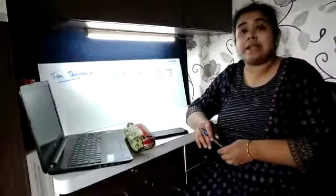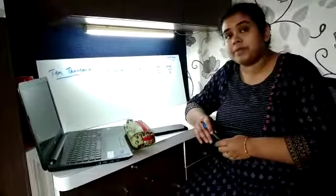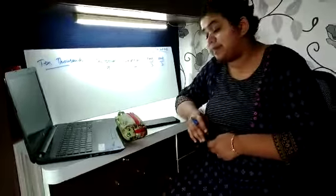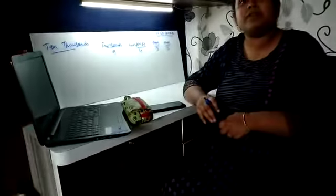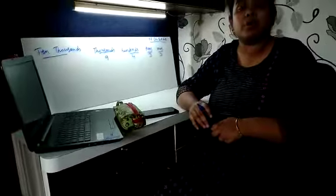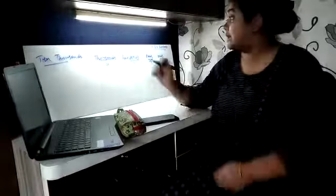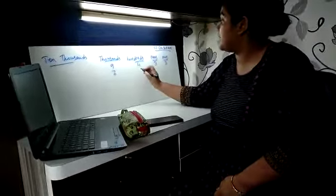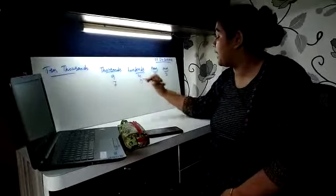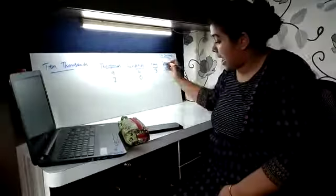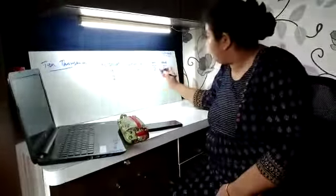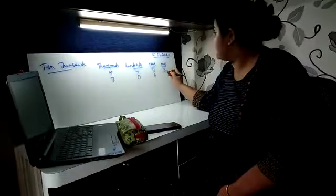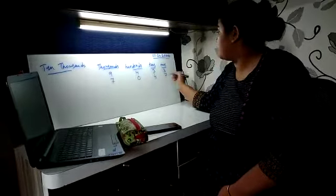Is it clear everyone? Now let us go to the next sum: 7047. That means 7000, 0 hundreds, 4 tens and 7 ones.